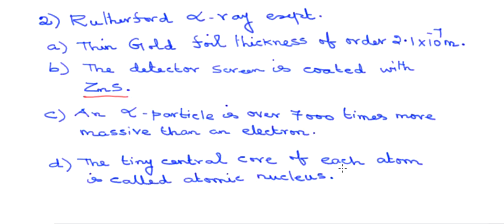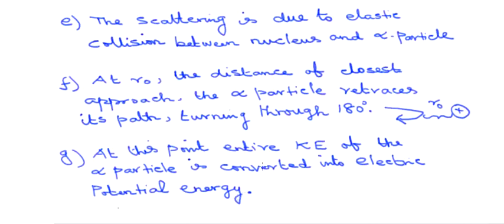The tiny central core of each atom is called the atomic nucleus. Rutherford is the first scientist to name the positive structure of the atom as nucleus, and it is well concentrated at the center. The scattering is due to elastic collision between the nucleus and the alpha particle — both are positively charged, so repulsion takes place. There is no physical touch; the scattering occurs without contact.